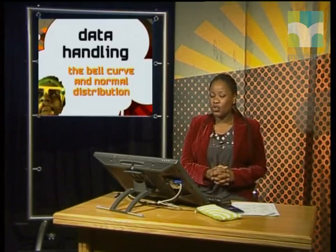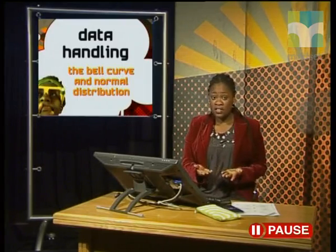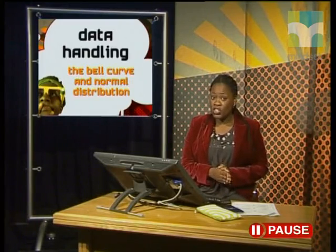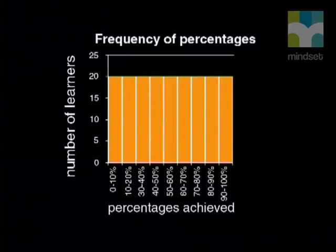Let's think about another situation. Imagine a test being given to the entire grade in one school — say there are 200 learners in this grade. What do you think the test scores will be like? Do you think the scores will be evenly distributed from 0 to 100? This would mean that 20 students would get between 0 and 10, 20 students between 10 and 20, and so on all the way to 100. If this happened, the teacher would get a frequency distribution that looks like this.